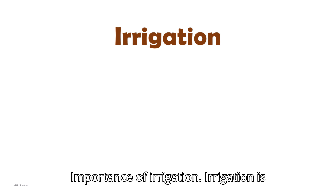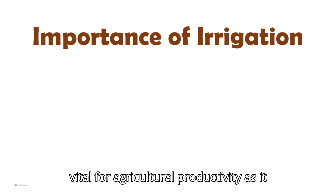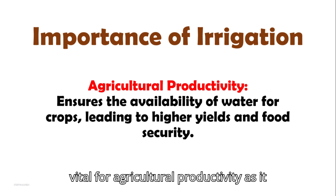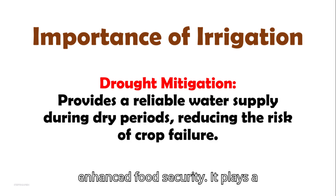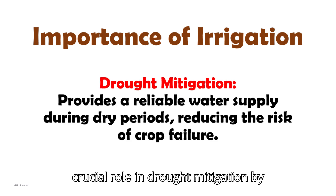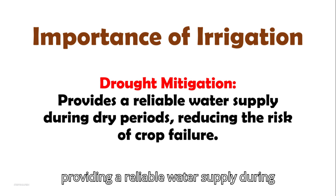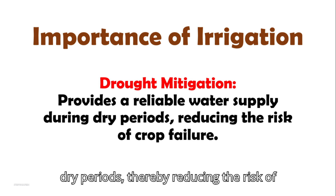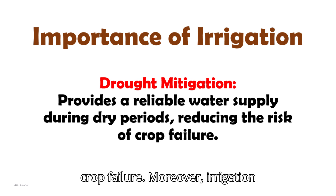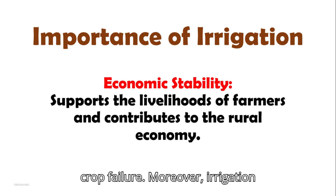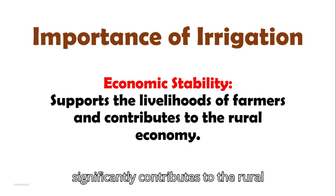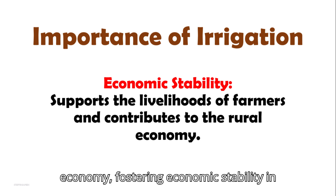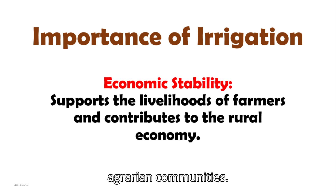Irrigation is vital for agricultural productivity as it ensures the availability of water for crops, leading to higher yields and enhanced food security. It plays a crucial role in drought mitigation by providing a reliable water supply during dry periods, thereby reducing the risk of crop failure. Moreover, irrigation supports the livelihoods of farmers and significantly contributes to the rural economy, fostering economic stability in agrarian communities.